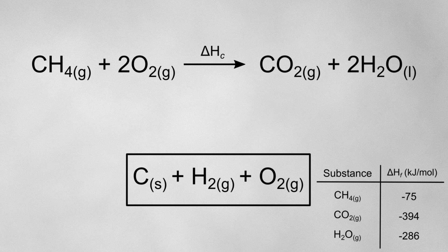Since the formation enthalpy describes the formation of a compound from its elements, I'm going to draw arrows going from my box of elements up to my reactants and up to my products. The arrow on the left represents the total formation enthalpies of all of my reactants, and the arrow on the right represents the total formation enthalpies of all of my products.